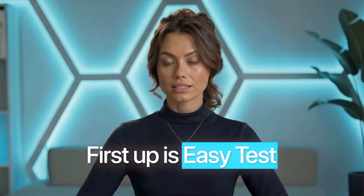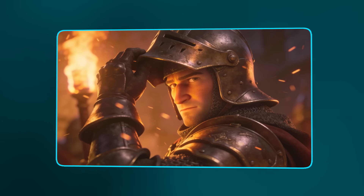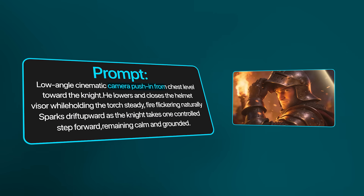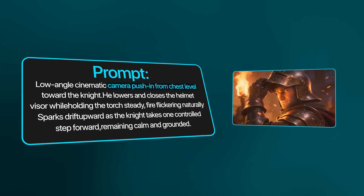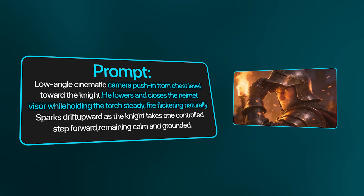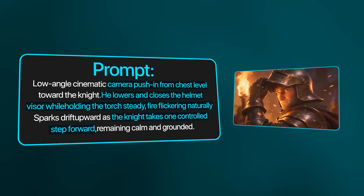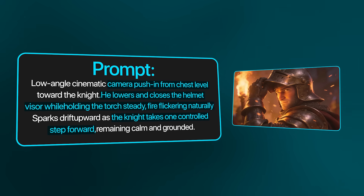First up is our easy test. For this one, we're using an image of a knight holding a torch. The goal is to see how well each model handles basic character motion, camera movement, and natural physics like fire and sparks, without breaking the character or the scene. For the prompt, I want the camera to push in on the knight as he lowers his visor, holds the torch steady, and takes a controlled step forward, with fire and sparks moving naturally.